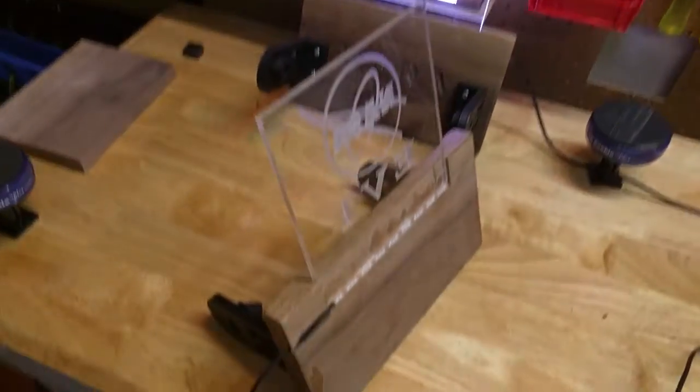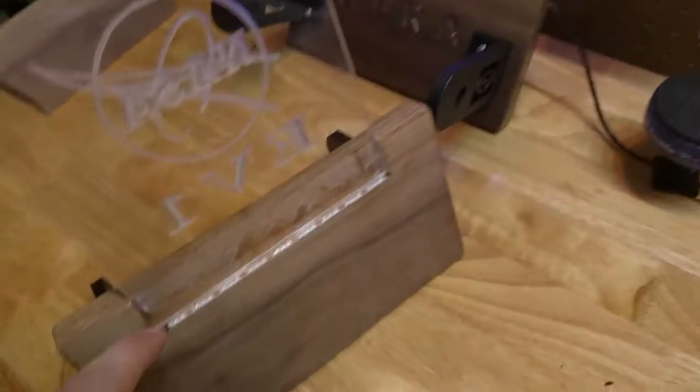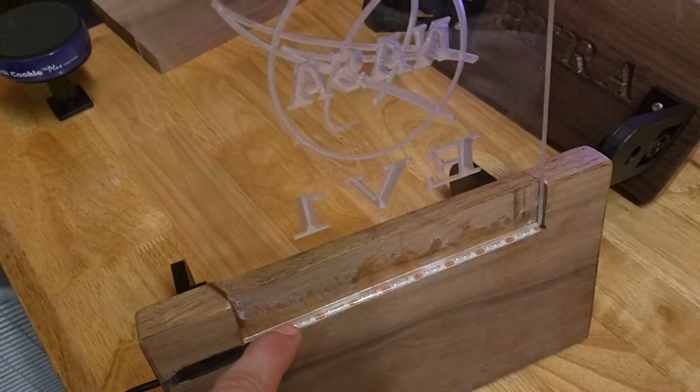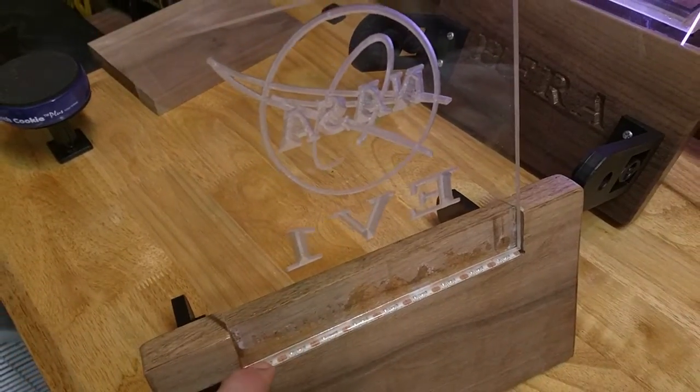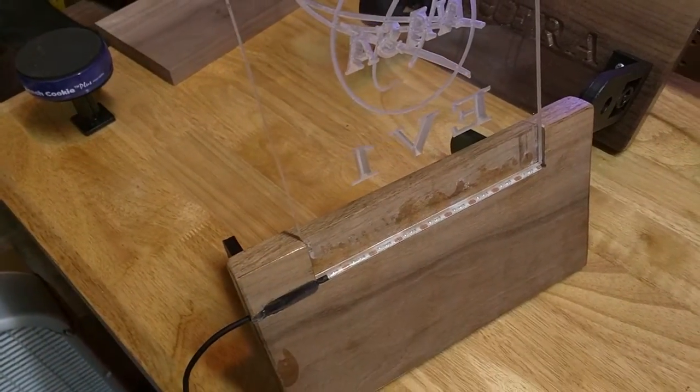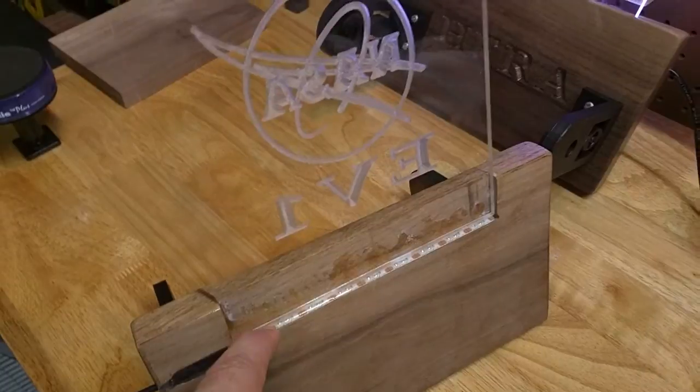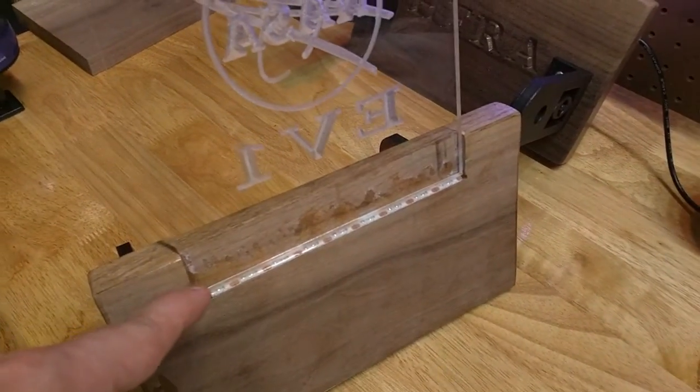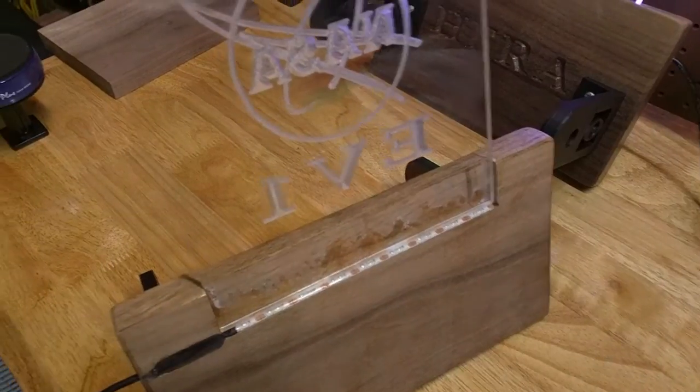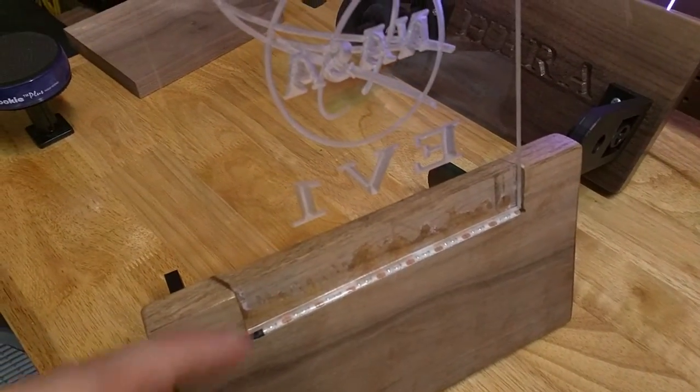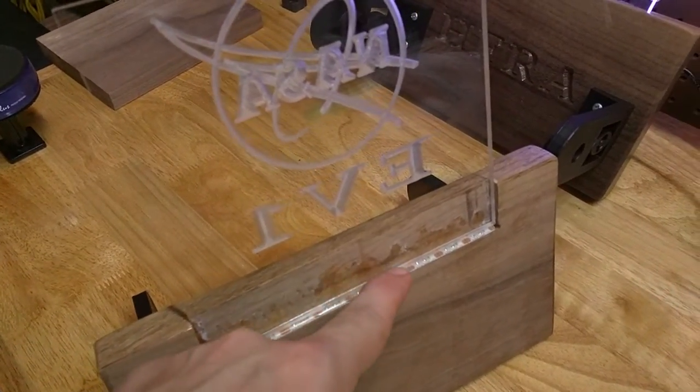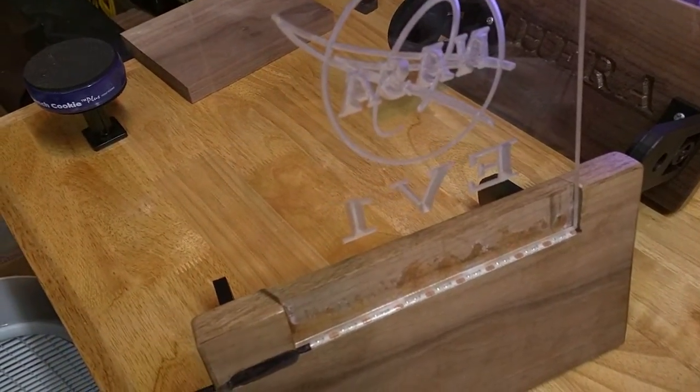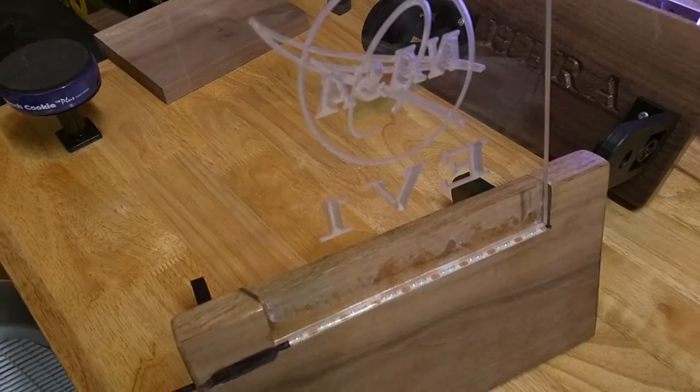This light strip you can get on Amazon. This one is a waterproof light strip, which means it has a rubber coating over them. Obviously I'm not doing anything in water, but the reason I wanted that is I wanted the acrylic to sit right down on top of it and not have to worry about building a shelf for it to sit on. I wanted it to be very close and go straight on top of the LEDs. So that little coating on top of the LEDs lets the acrylic just sit all the way down on top of it and not harm them or hit the circuit or anything.